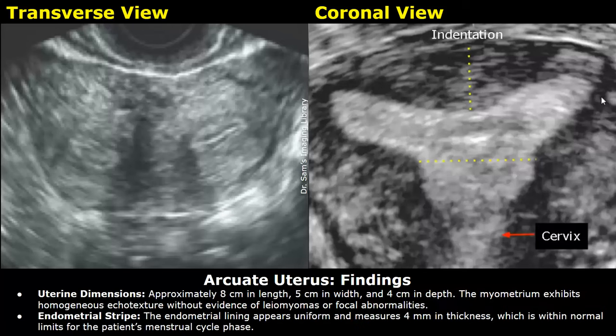Uterine dimensions: approximately 8 centimeters in length, 5 centimeters in width, and 4 centimeters in depth. The myometrium exhibits homogeneous echo texture without evidence of leiomyomas or focal abnormalities. Endometrial stripe: the endometrial lining appears uniform and measures 4 millimeters in thickness, which is within normal limits for the patient's menstrual cycle phase.